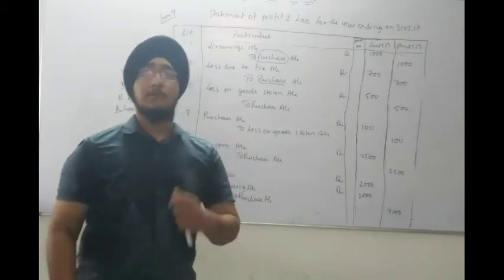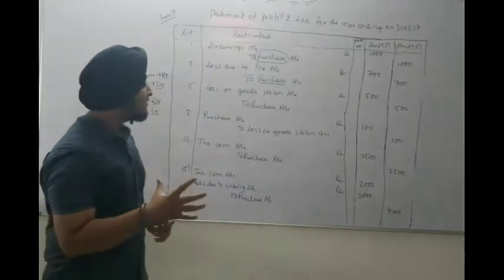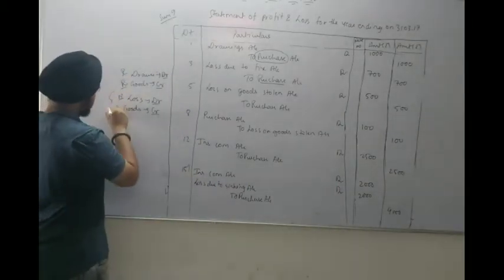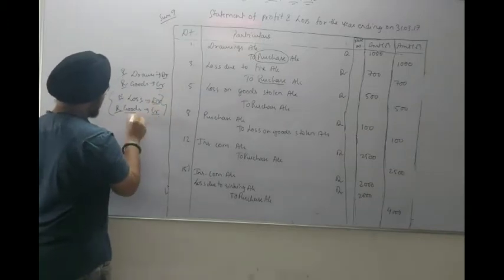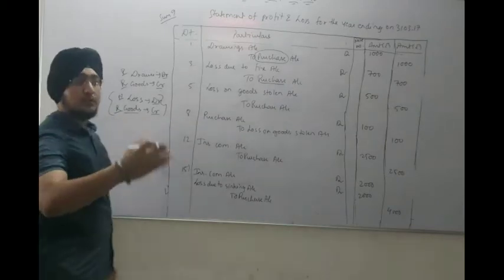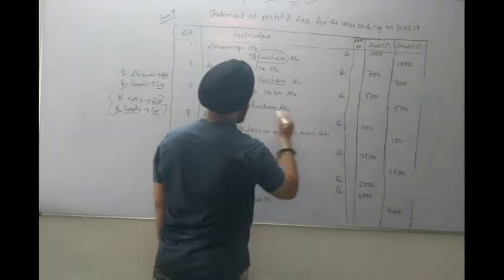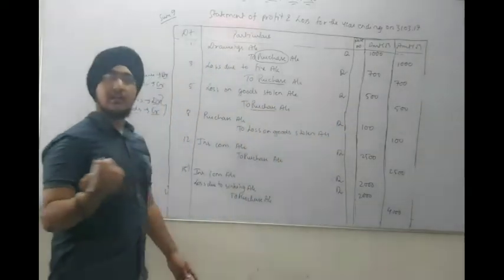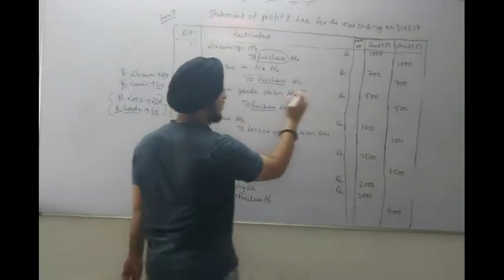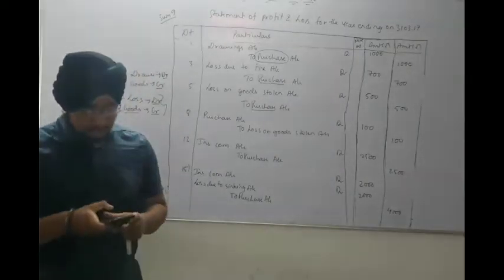Next transaction: Goods of Rs.500 is stolen from business. Again, two things — Loss and Goods. Loss is debited (nominal account), goods go out so goods account is credited (real account). Journal entry: Loss on goods stolen account debit 500 to Purchase account — because goods go out in other ways.